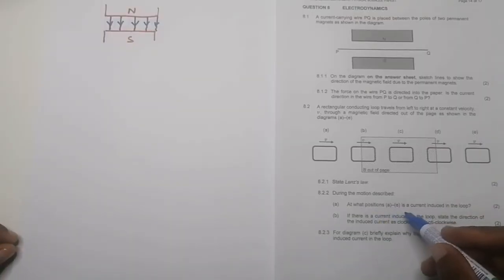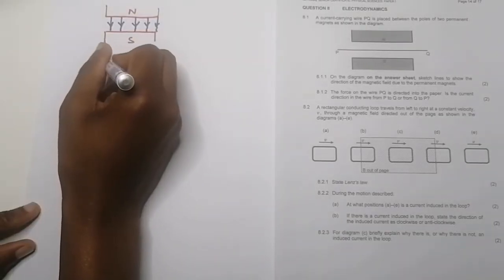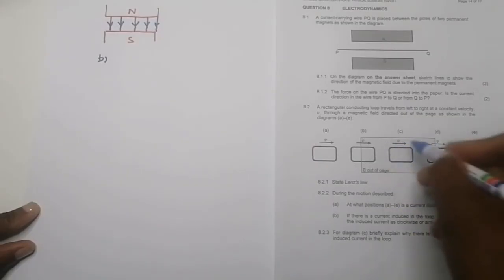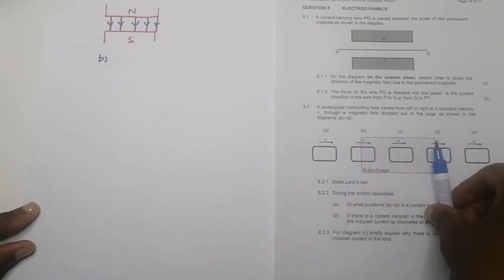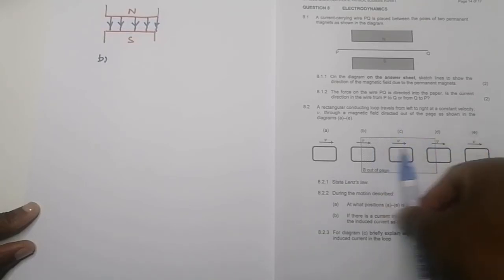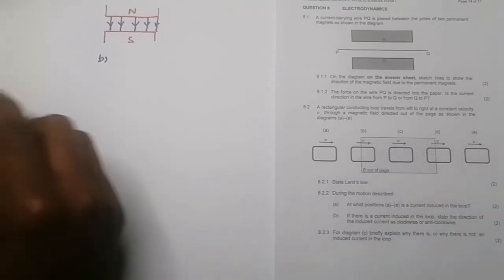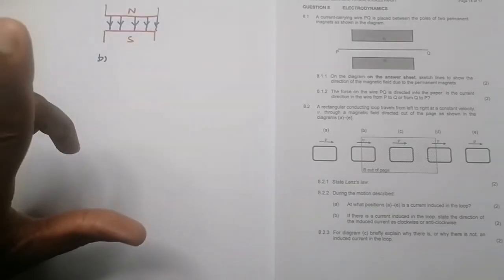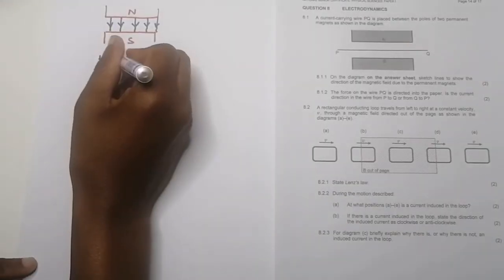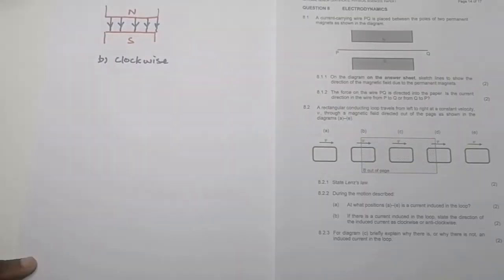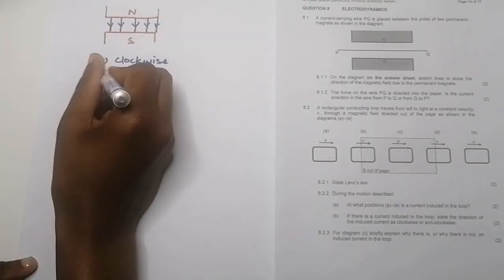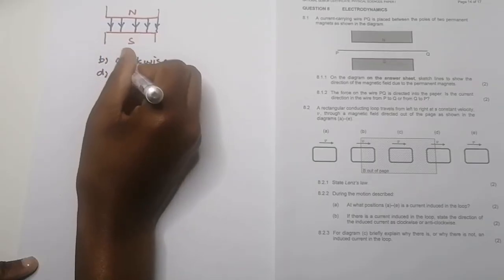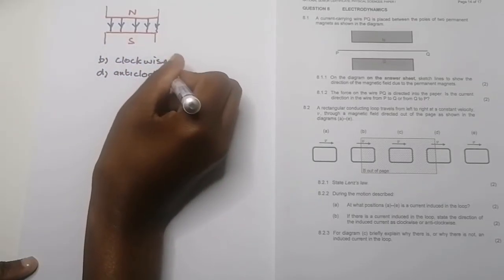To answer: at what positions is the current induced in the loop — it would be at point B and also at point D. Remember, there's no change in magnetic flux at C because the loop is fully inside the constant field. At B you'd have a clockwise change in current, and at D, since the loop is now moving out of the field, the induced current would be anti-clockwise.